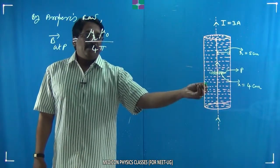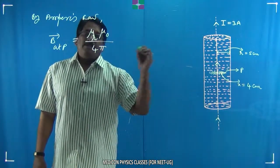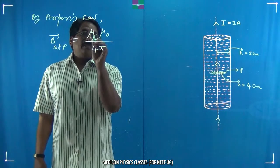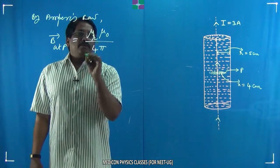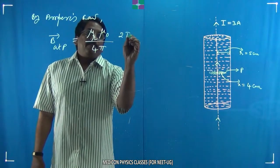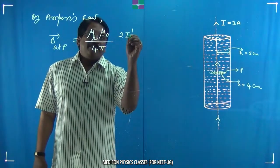...but when relative permeability is given to us, therefore I am expressing it as μᵣ into μ₀/(4π) into 2i'. Look at this i', I am taking...